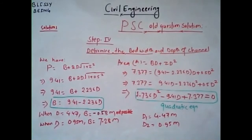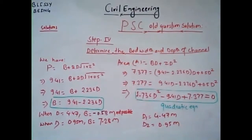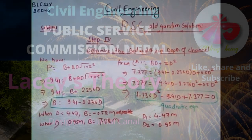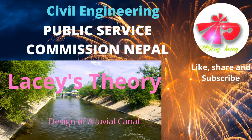Substituting D₁ = 4.47 m into the bed width expression gives a negative value of B = −0.58 m. Since bed width cannot be negative, D₁ = 4.47 m is rejected. Using the second value D₂ = 0.95 m, the bed width comes out to B = 7.28 m, which is positive and therefore the valid solution. So the depth of the channel is 0.95 m and the bed width is 7.28 m.